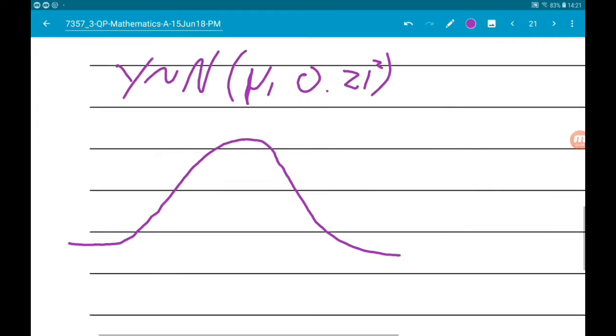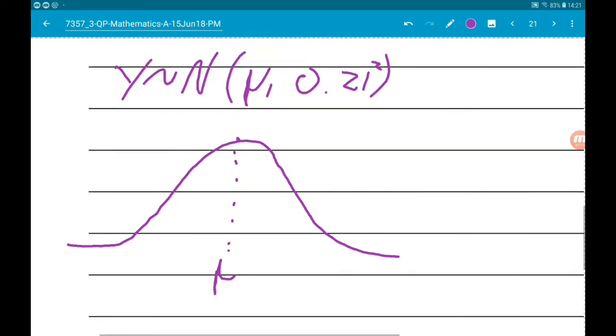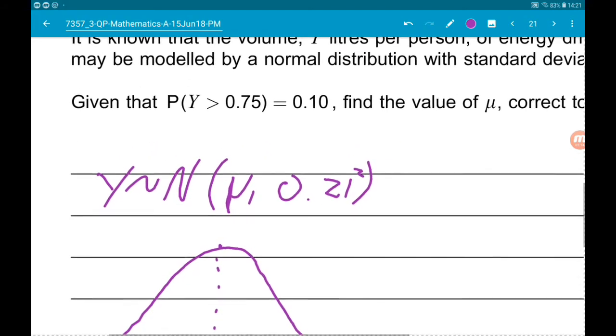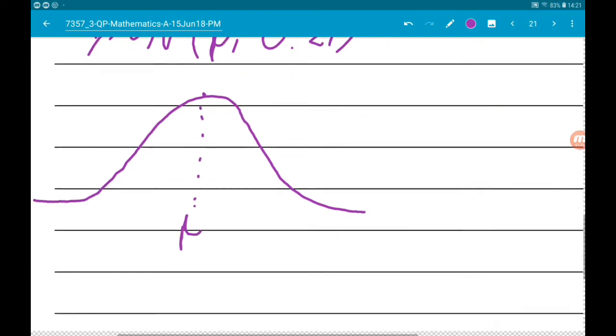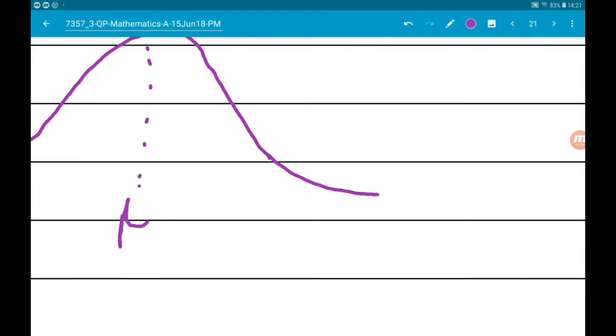Our mean mu is in the middle, and we know the probability that Y is greater than 0.75 is 0.1. So we got 0.75 there, the area in there is 0.1, and the area in there is 0.9.